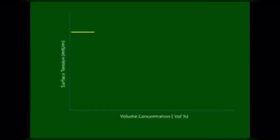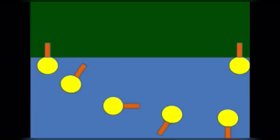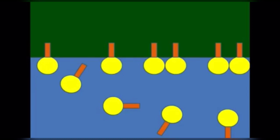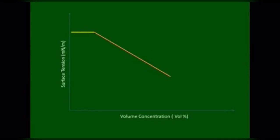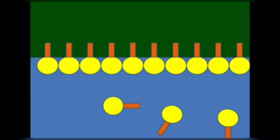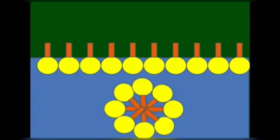When adding surfactant to water at low concentrations, the surface tension may change very little. Surfactant molecules are absorbed to the surface of the water with hydrophobic tails in the air and hydrophilic heads in the water. Then, as the surface accumulates more surfactant, the surface tension decreases. When there is no more space on the surface, a micelle will form with the hydrophobic tails inside and the hydrophilic heads outside.